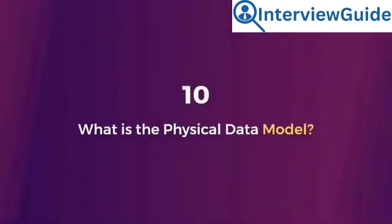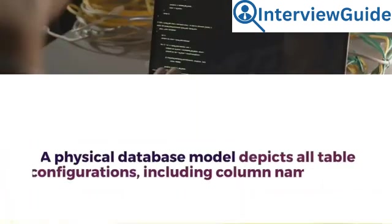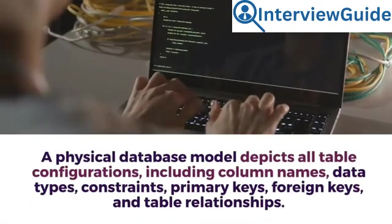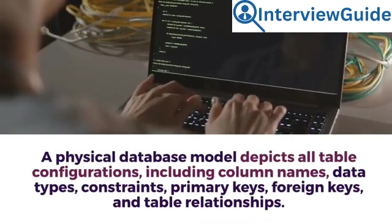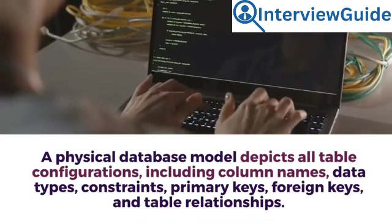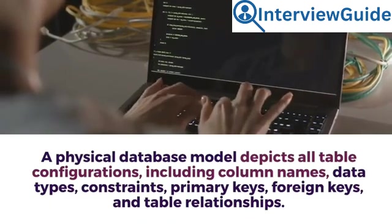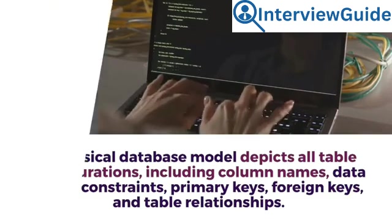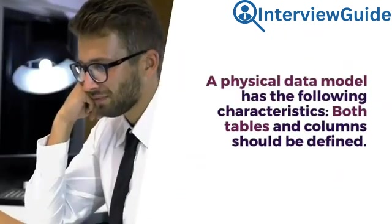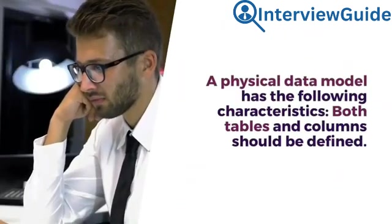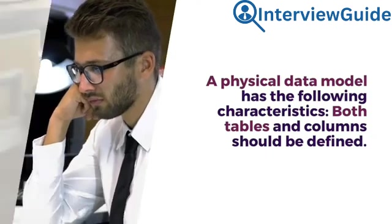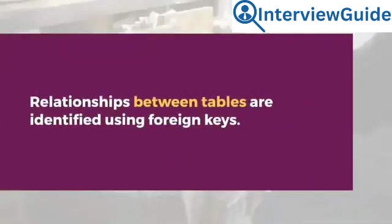Question 10: What is the physical data model? Sample answer: A physical database model depicts all table configurations, including column names, data types, constraints, primary keys, foreign keys, and table relationships. A physical data model has the following characteristics: both tables and columns should be defined, and relationships between tables are identified using foreign keys.